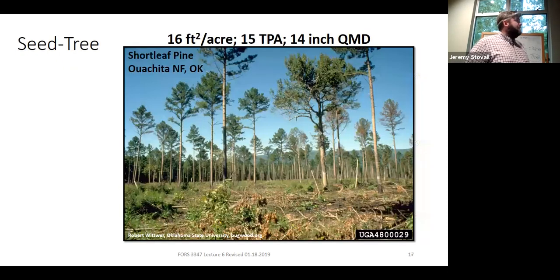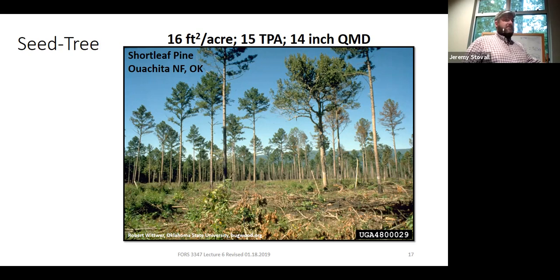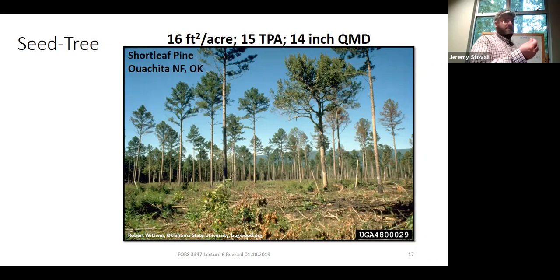Everything is driven by density. Here's an example from the Ouachita National Forest in Oklahoma in shortleaf pine — fifteen trees per acre, a 14-inch average diameter, leaving 16 square feet per acre of basal area. Did they do a good job selecting their seed trees? When selecting seed trees, you want the best trees because those are the parents of your next cohort — the mother trees and mostly the father trees for your next cohort. Leave the best form trees and your next rotation will hopefully have better form trees due to better genetics.